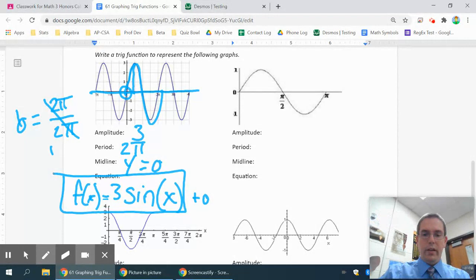On the next one, we can also look at its midline. So midline, again, is y equals 0. This time, your amplitude is 1. Your period is how long it takes a cycle to repeat, in this case pi.